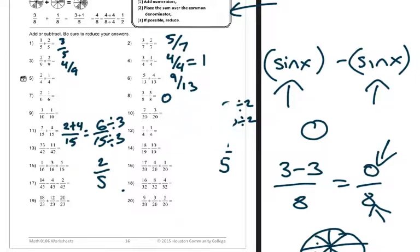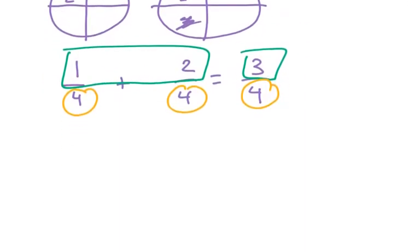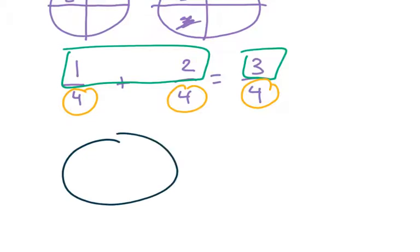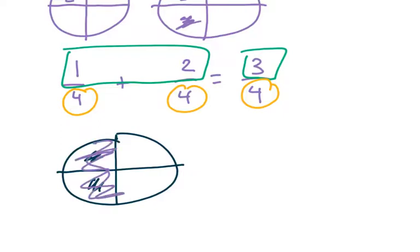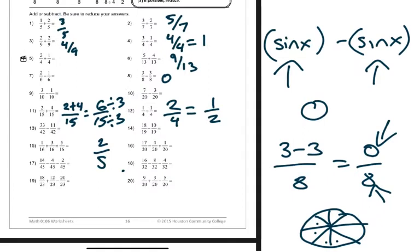One-fourth plus one-fourth is going to be two-fourths, which is one-half. This is so simple it's easy to illustrate. Notice if I take the pizza - one-fourth plus another fourth - if I shade this whole side, that's literally half, but it's also two-fourths. This is what pictorially we mean when we are talking about fractions.